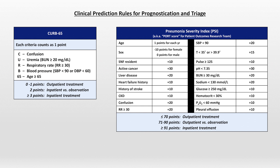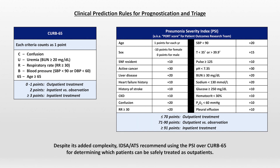The PSI is more detailed, and in comparison to the CURB-65, it places greater weight on the age of the patient, makes a distinction in risk between the two sexes, and places significant weight on elements of past medical history. But like the CURB-65, the higher the patient's score, the more acute the recommended location of treatment. Despite its added complexity, the IDSA and ATS recommend using the PSI over CURB-65 for determining which patients can be safely treated as outpatients, while the previous severe pneumonia criteria are best used to determine the appropriateness of an ICU admission.